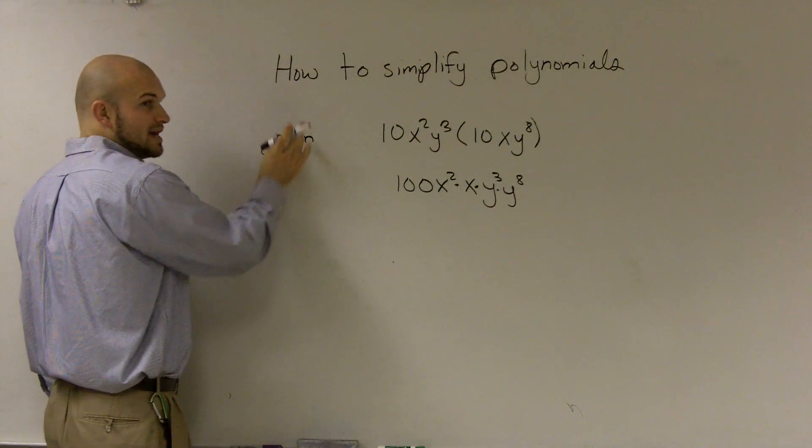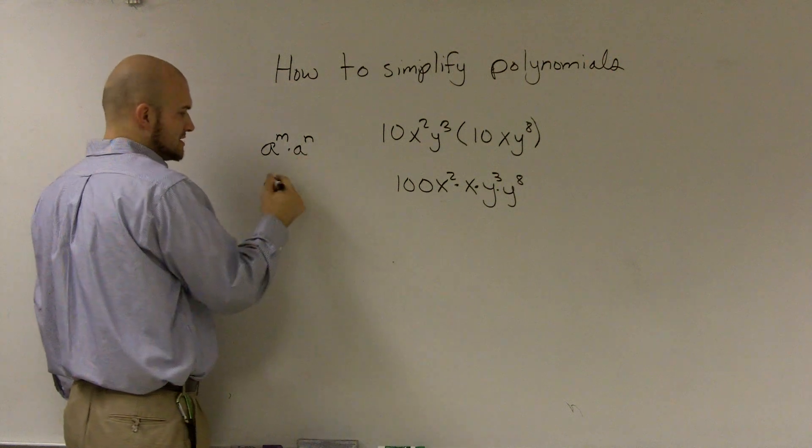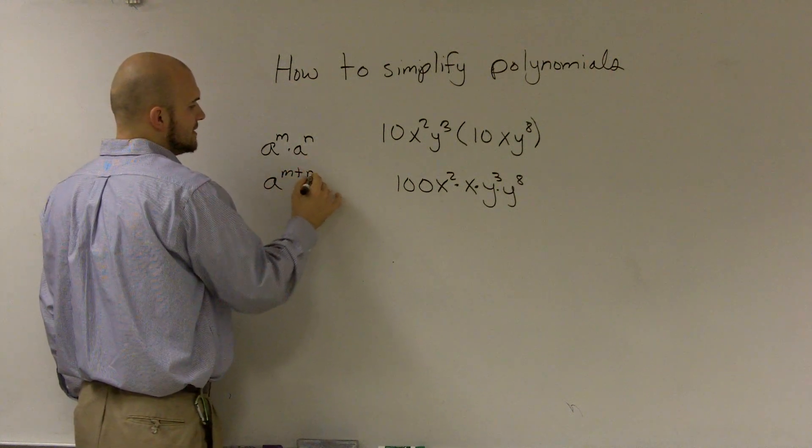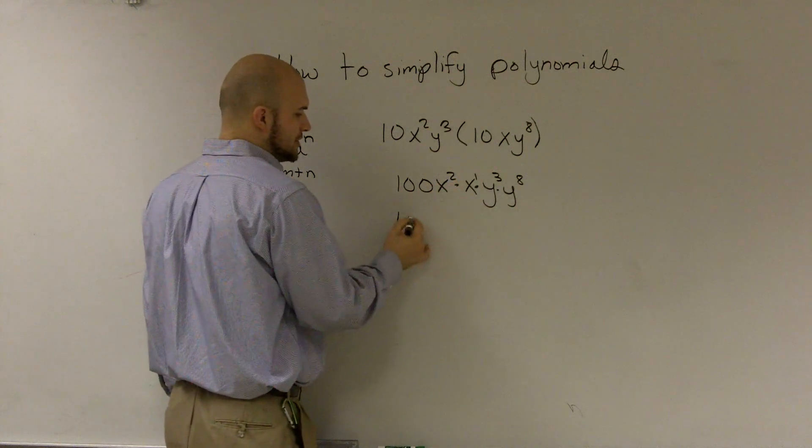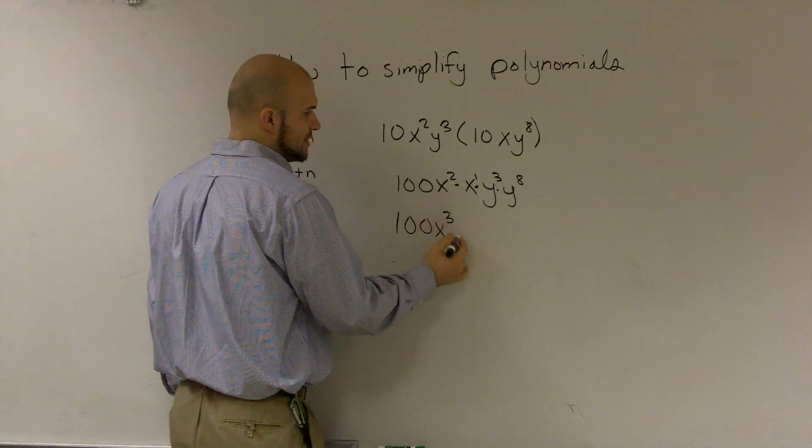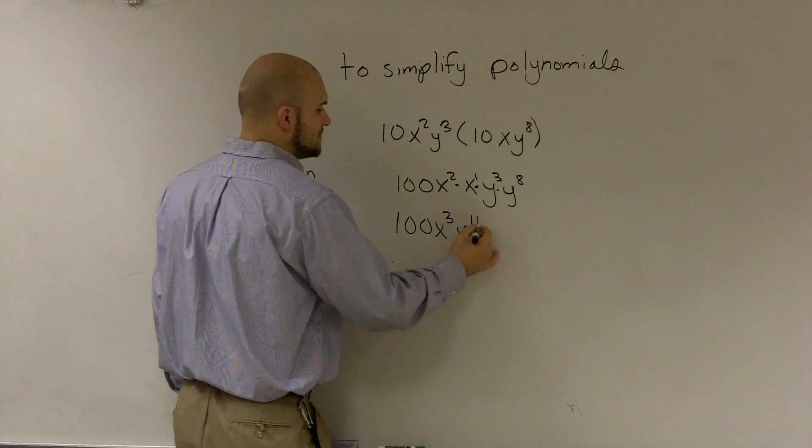When the bases are the same, you add the exponents. So this x essentially has an exponent of 1, so I have 100 x to the third times y to the eleventh.